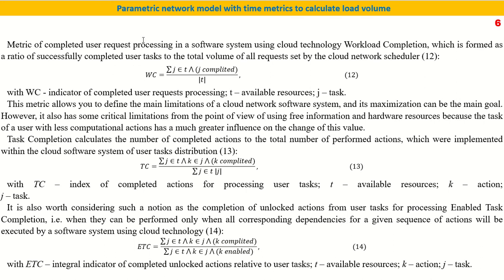To make this approach more substantiated, we use metrics that incorporate indicators of completed user request processing, available time and resources, and tasks on hand. We need to consider such notions as completion of unlocking actions from the user and the enable task completion parameter, arriving at a level of integral indicators of completed actions relative to the user task, allowing us to evaluate the available resources.